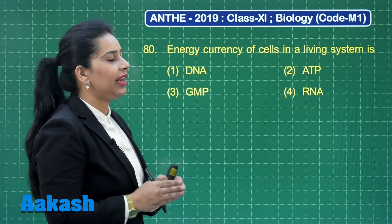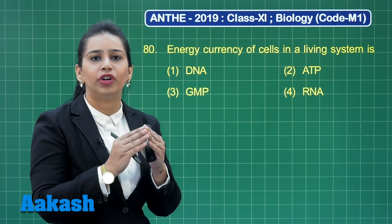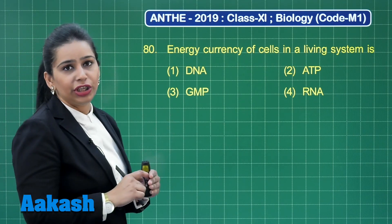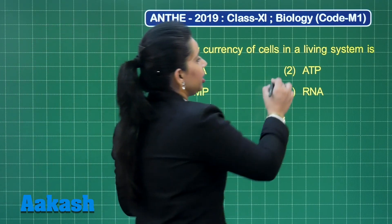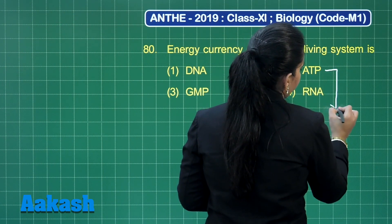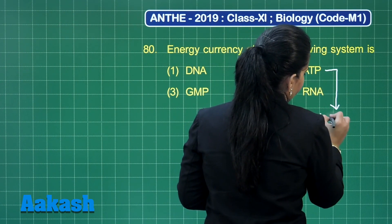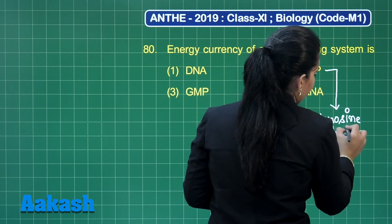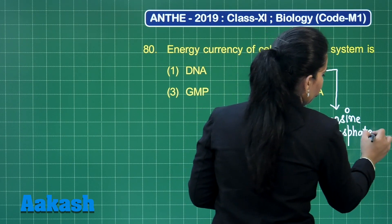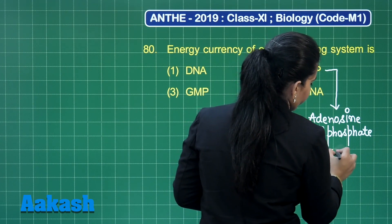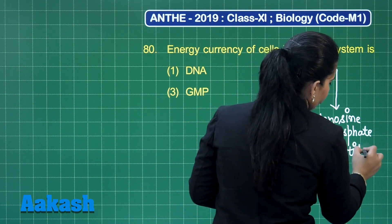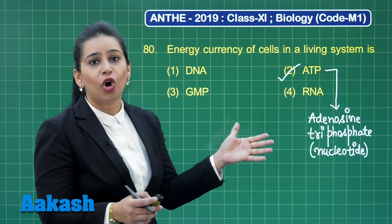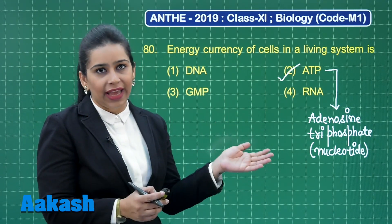As you have learned, the energy currency of a living system is ATP — adenosine triphosphate. ATP is actually a nucleotide which also acts as an energy carrier of our body, apart from acting as a monomeric unit for the nucleic acids.